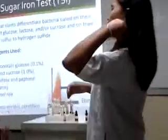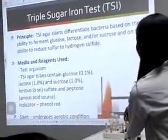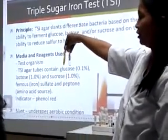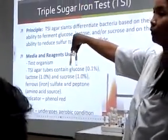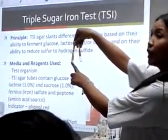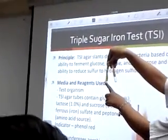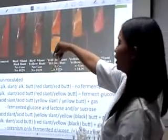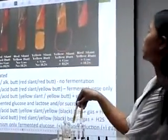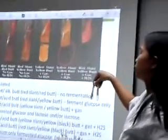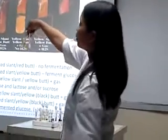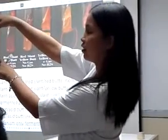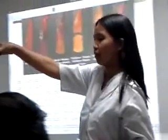TSI — how will you read that one? Look at the slant. What is the color of the slant? Yellow — so that is acid over acid. Acid over acid means they ferment both sugars. Acid over acid means fermented glucose and lactose and/or sucrose. Do you have gas? For E. coli, we have gas. Gas is seen as cracking of your medium or the medium will be lifted off.